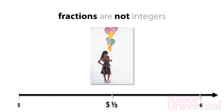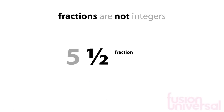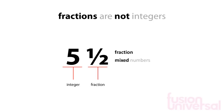Five-and-a-half looks like this. It is between five and six, so it is not an integer. Half is an example of a fraction, and five-and-a-half is an example of a mixed number. We have learned what integers and fractions are.